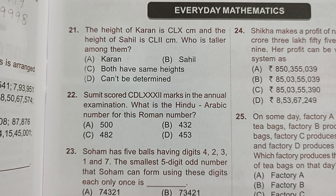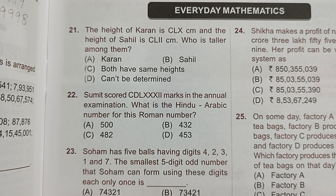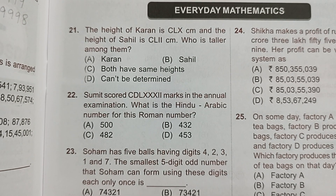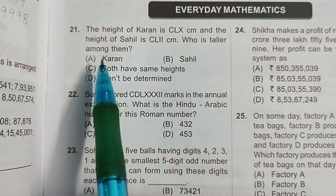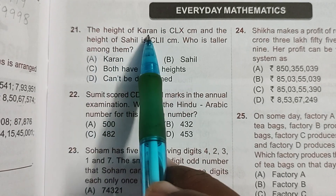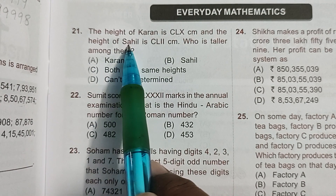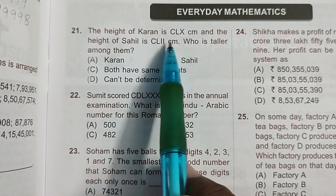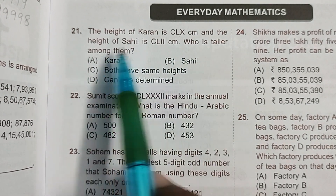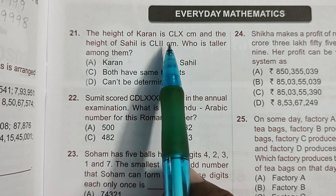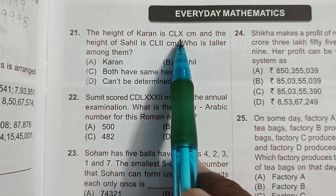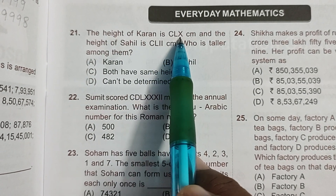Hello children, welcome to my channel. Let's continue chapter 1 up to question number 20, which we have solved today. We will start from question number 21. The height of Karan is CLX centimeters and the height of Sahil is CLII centimeters — who is taller among them? The heights are given in Roman numerals.